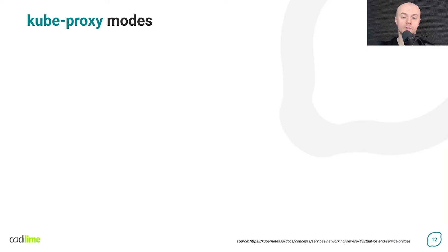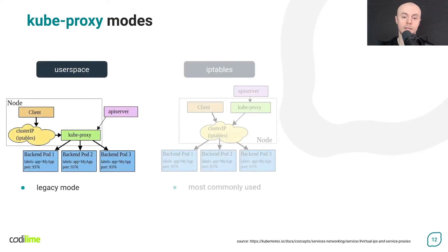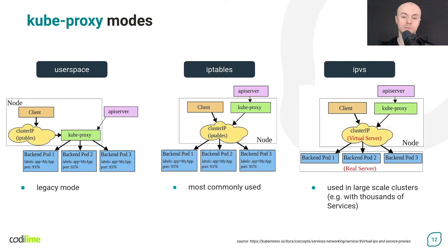Kube-proxy offers three modes of operation: user space, which is a legacy mode; then iptables mode, which is used most often; and IPVS mode, which is mainly used in large clusters. Now let's discuss each of them.